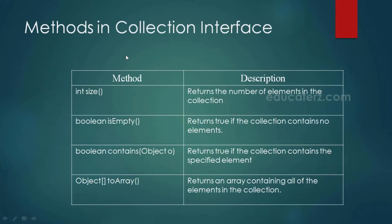There are a few important methods in the Collection interface: size(), isEmpty(), contains(), and toArray(). size() returns the number of elements in the collection. isEmpty() returns a boolean — true if the collection has no elements. contains() returns true if the collection contains the specified element. toArray() returns an array containing all the elements in the collection.